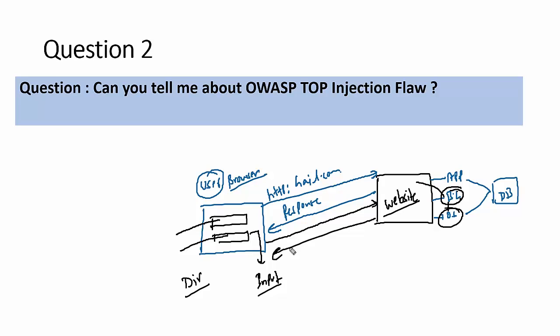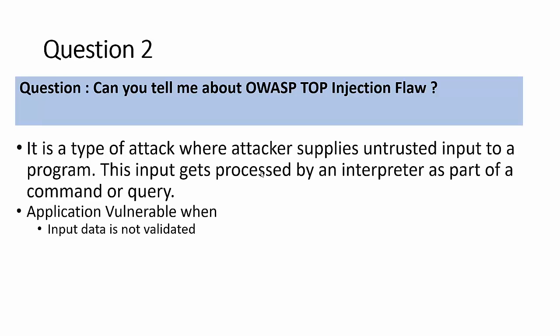This is the input validation flaw exploited through injection. Injection is a vulnerability that exploits the weakness of input validation to perform actions the user doesn't have permission for. For example, on an admin login page, instead of entering valid credentials, an attacker enters a true SQL statement. If the site is vulnerable to injection or input validation issues, it accepts queries that should not be permitted.